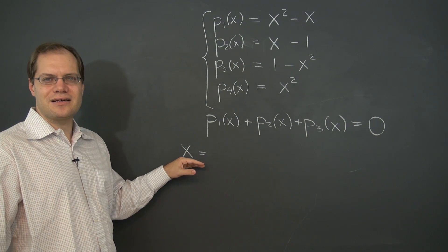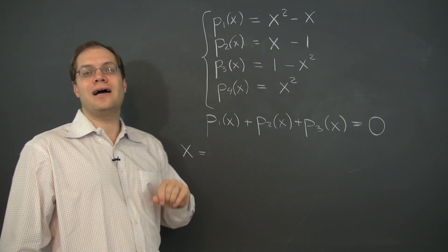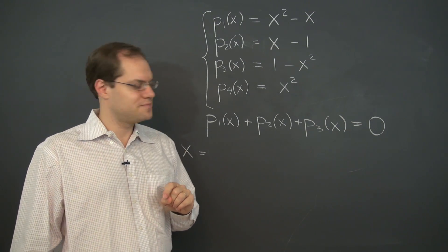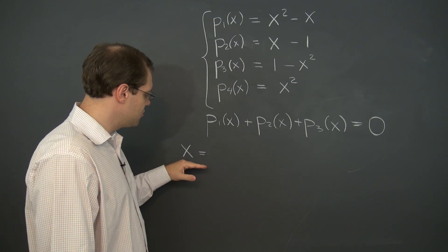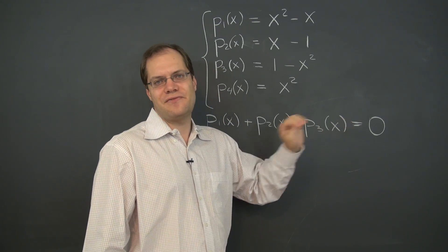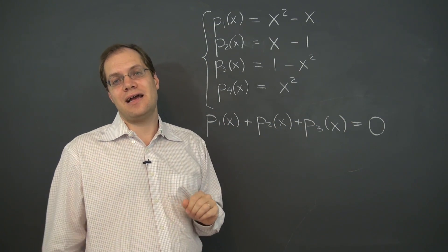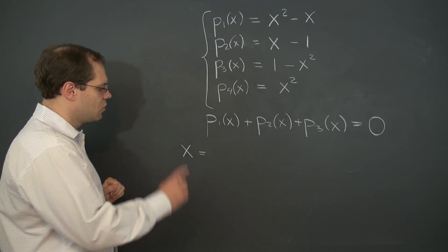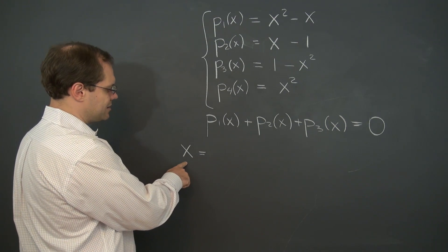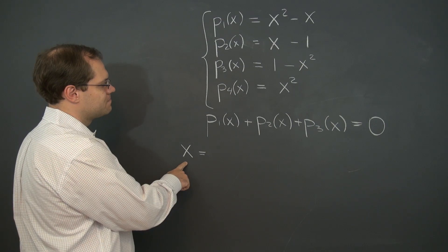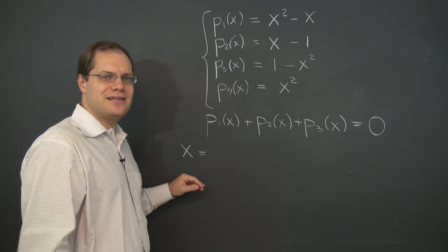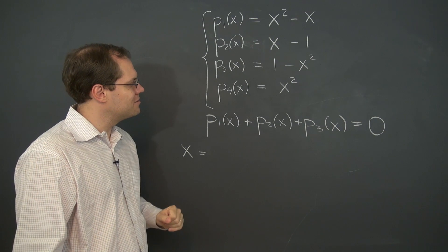So now to decompose x, we have to find one way of decomposing it, and then add any proportion of this fancy zero, and that's our answer. Okay, so how do we get x? Take a moment to figure out how to get x as a linear combination of these polynomials.